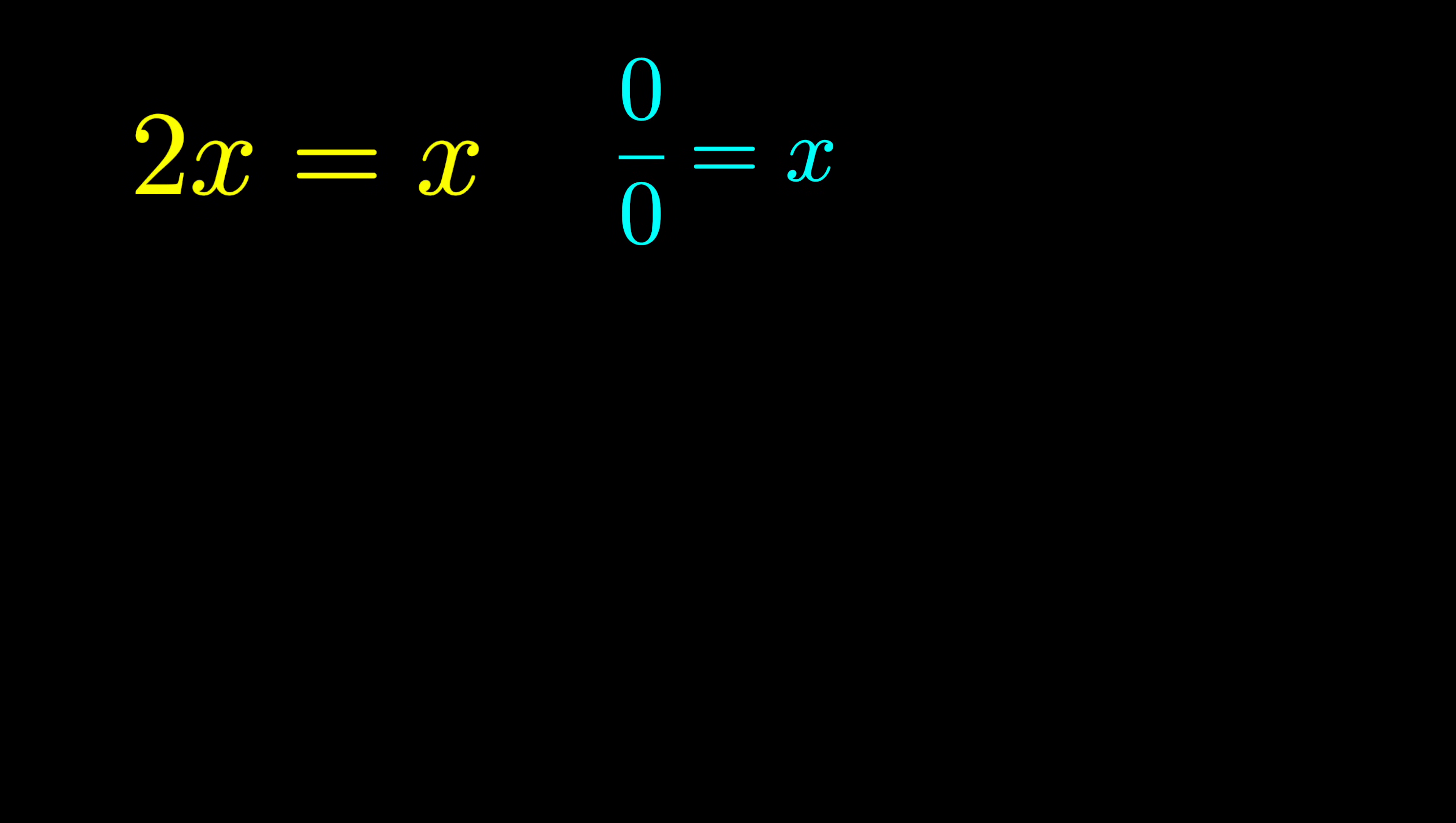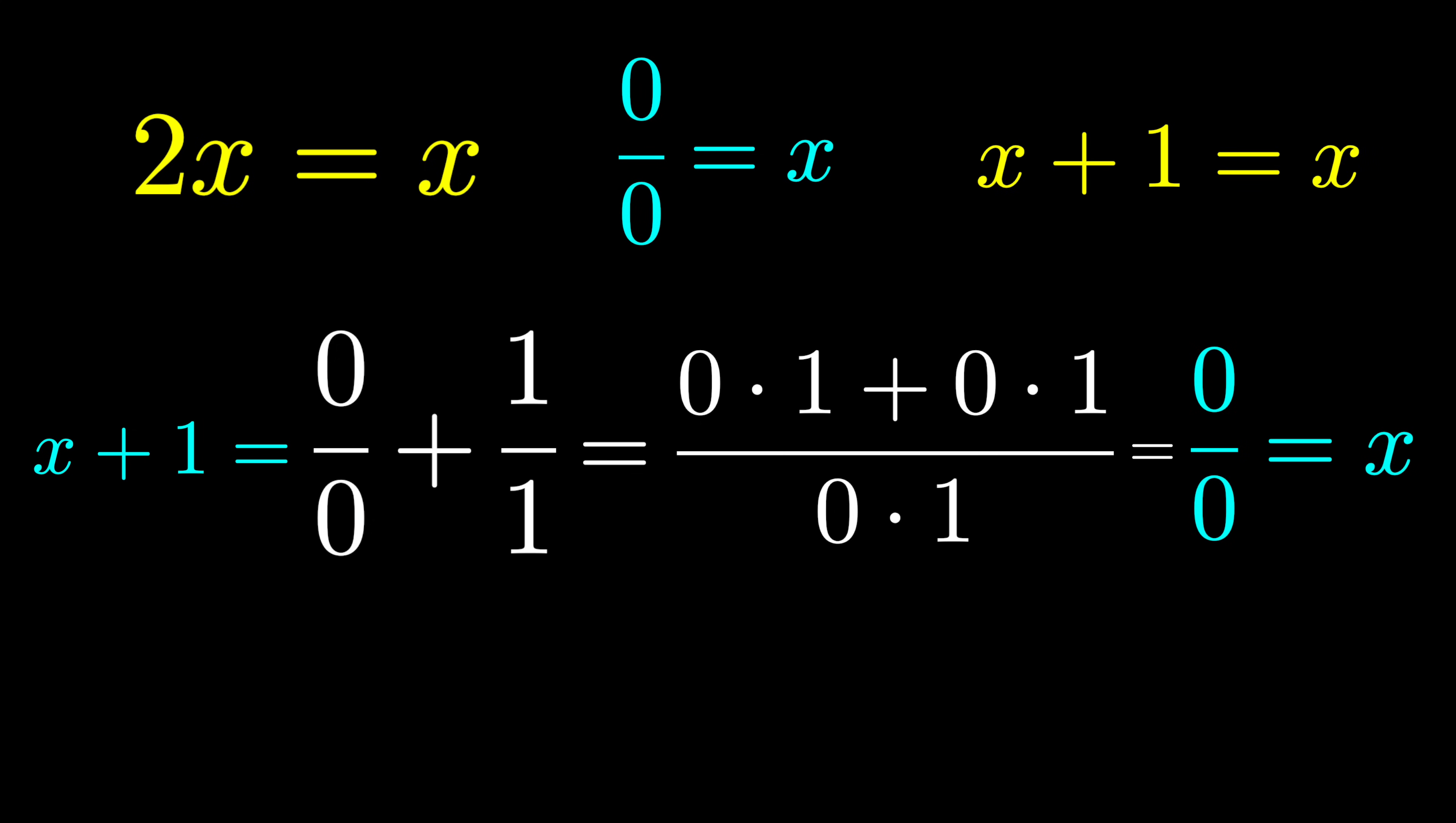If we want to keep our arithmetic rules in place, calling zero over zero x means we have to say 2x equals x. But now take a look at zero over zero plus one over one. If we combine this using properties of fractions, we obtain this expression, and what you'll notice if we just crunch these numbers in the numerator and denominator, we again get zero over zero, which we're calling x. The right side of this equation equals x, and on the left we have zero over zero plus one over one. That's x plus one. Thus, we must also conclude that x plus one equals x. And there is no real number that can satisfy both of these equations.